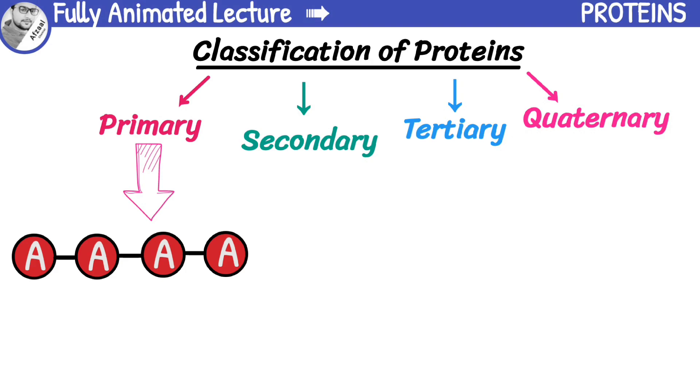Next, we have secondary proteins. These proteins have a more complex structure and are formed by folding of the primary protein chain.